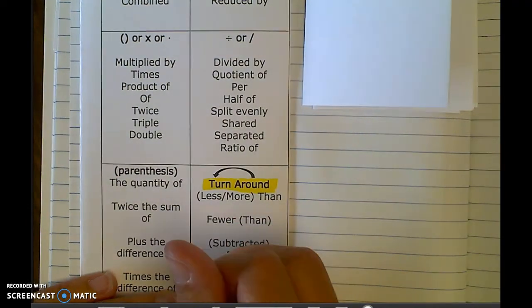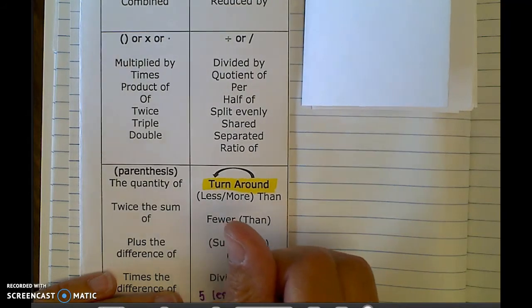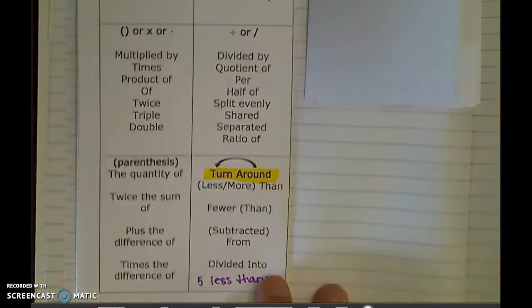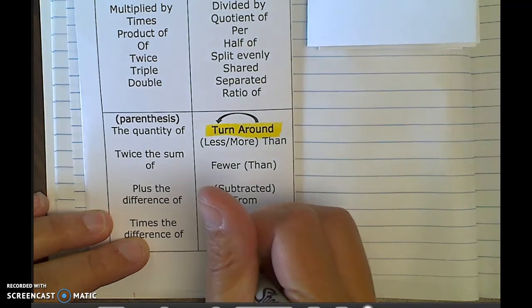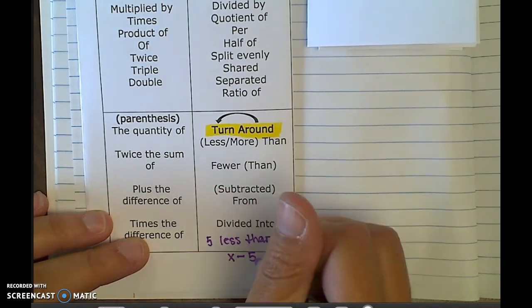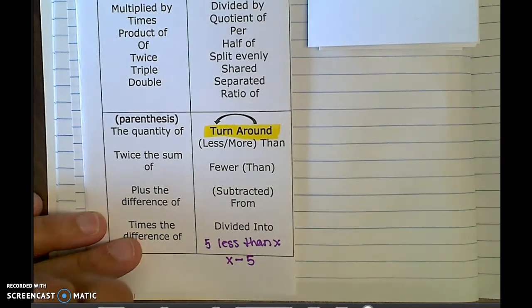If we had 5 less than x, when I write that out, I need to turn those two things around. So it's actually going to look like x minus 5 because the 5 came first and now it comes last. X came second and now it comes first. That's why it's a turn around.